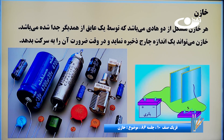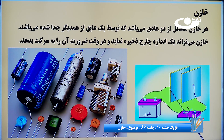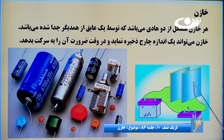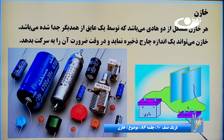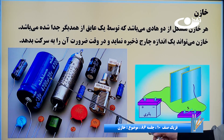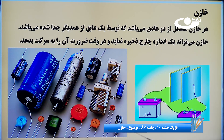بین هر دو لوحه فلزی یک آیق قرار دارد که می‌تواند خلا باشد یا می‌تواند موادی از جنس پارافین یا شیشه باشد. الکترون‌ها و پروتون‌ها از لوحه اول به لوحه دوم تغییر مکان می‌کنند. زمانی که از لوحه دوم خارج می‌شوند از طریق سیم‌ها حرکت می‌کنند و دوباره به سمت قطب منفی می‌رسند.